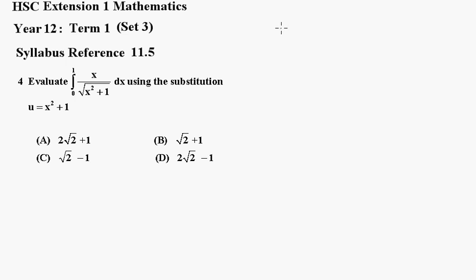We'll get u equals x squared plus 1. So du dx equals 2x. So we see that du equals 2x dx. That means a half of du equals x dx, which takes care of the numerator here.